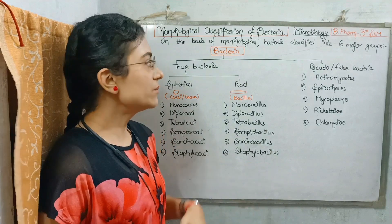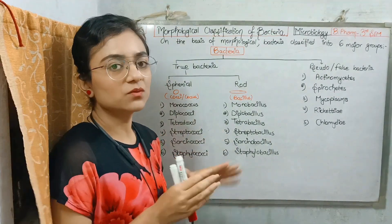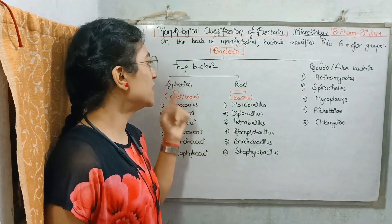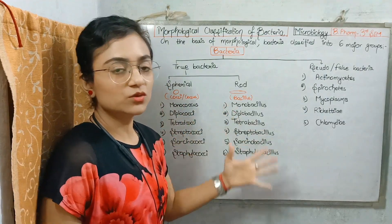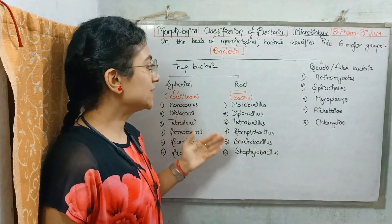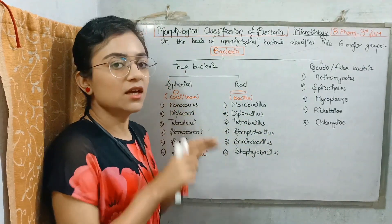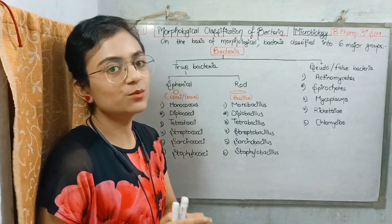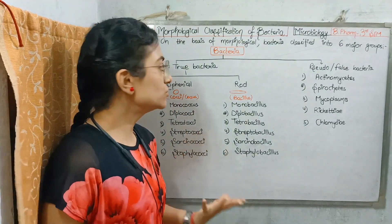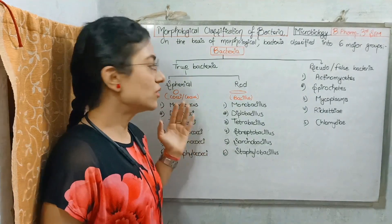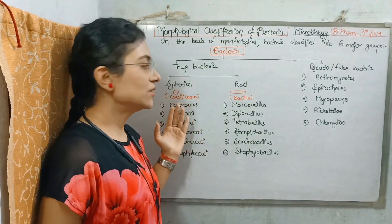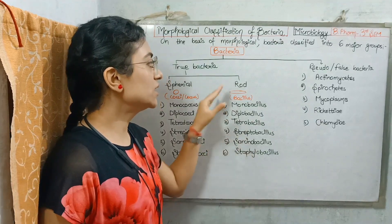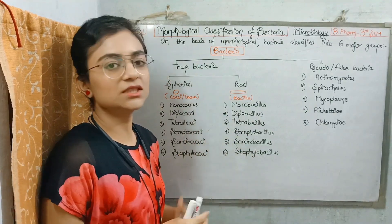True Bacteria grows in two aspects and has two types. One is Spherical and the other is Rod. Spherical bacteria are circular or oval in shape, and rod-shaped bacteria are called Bacillus.